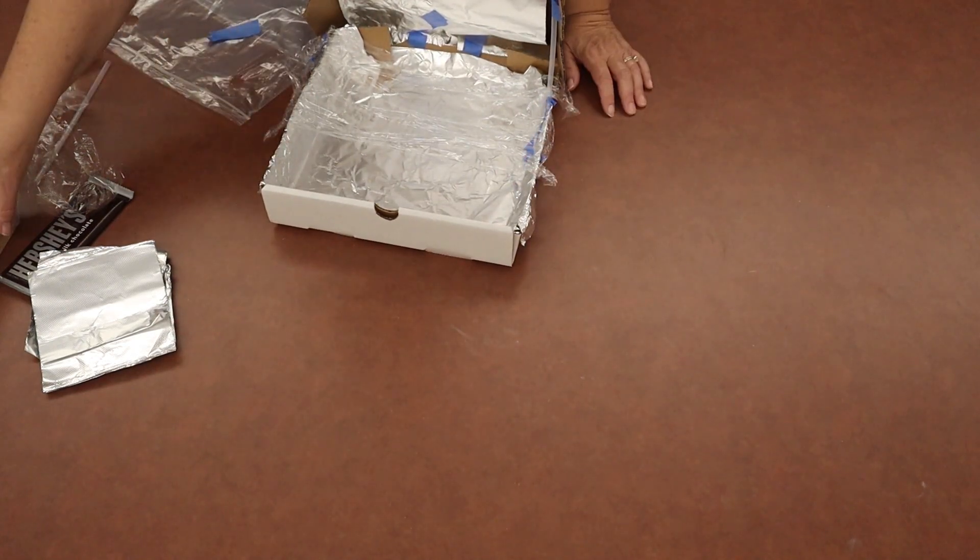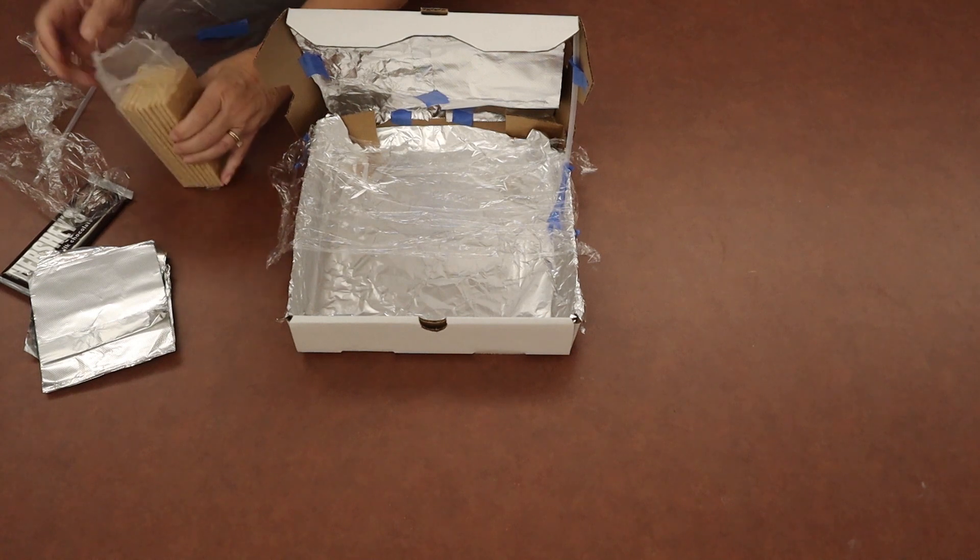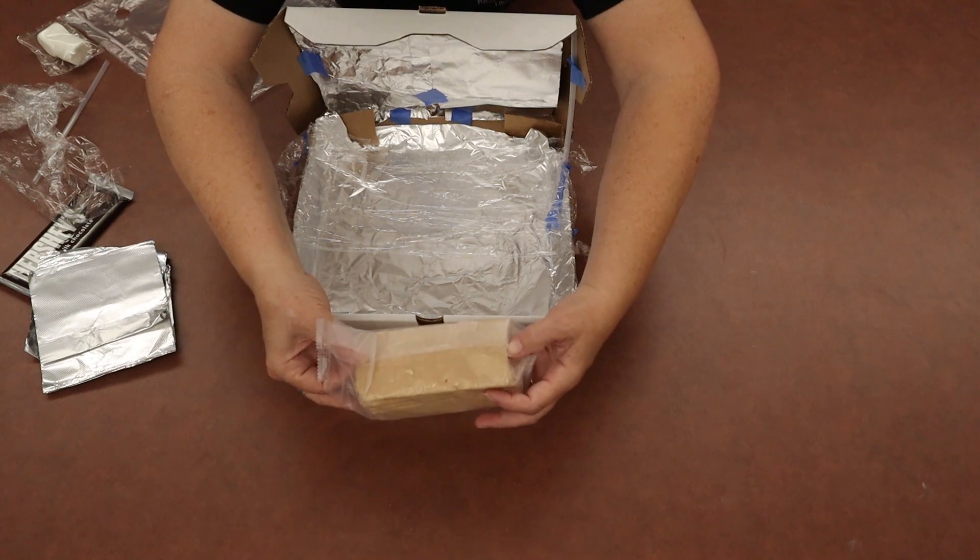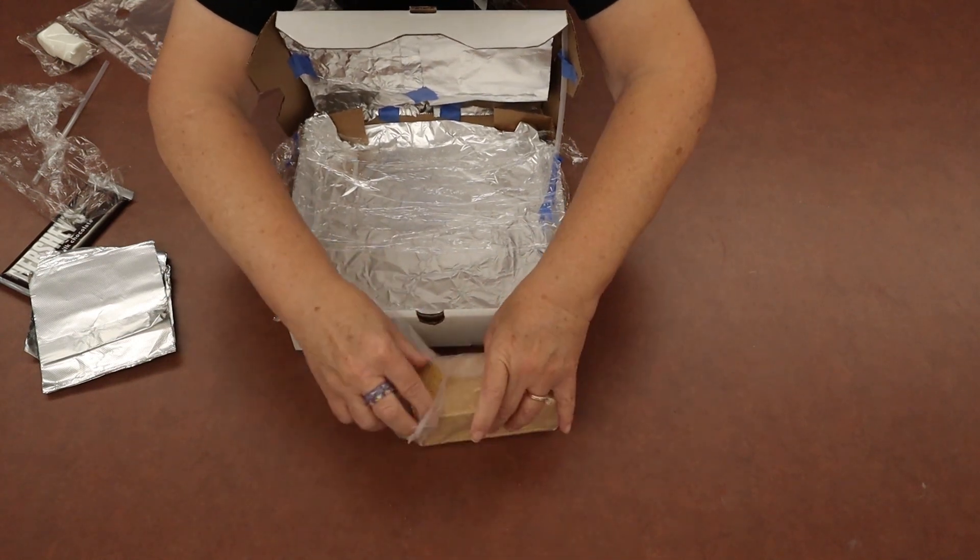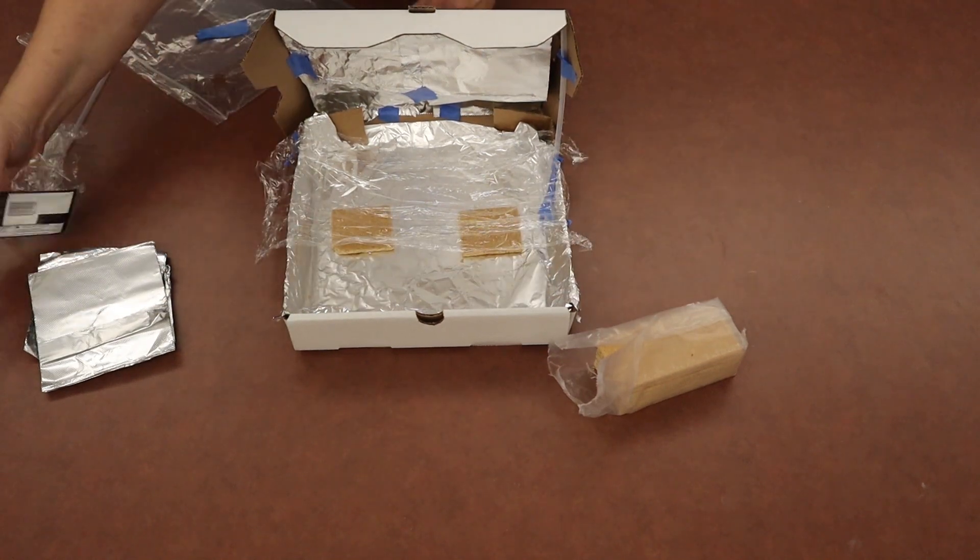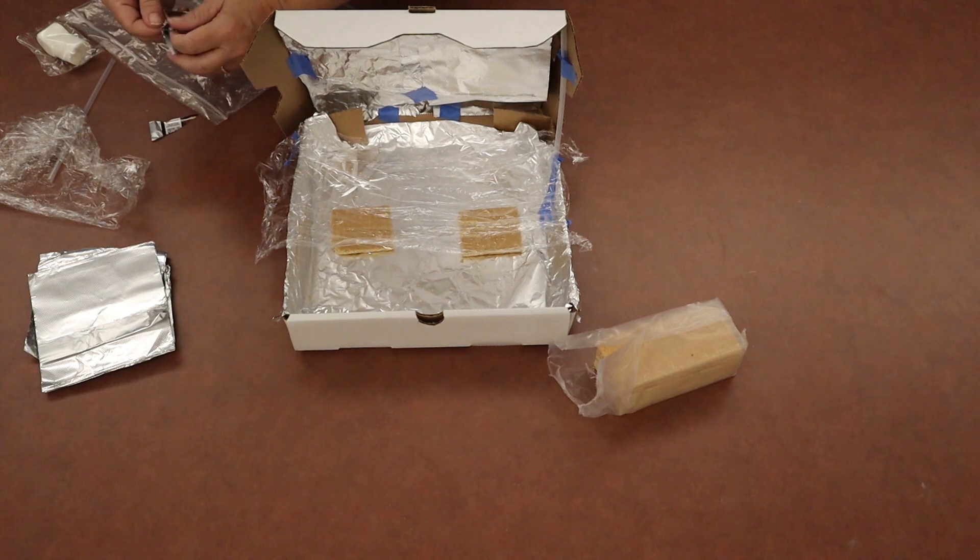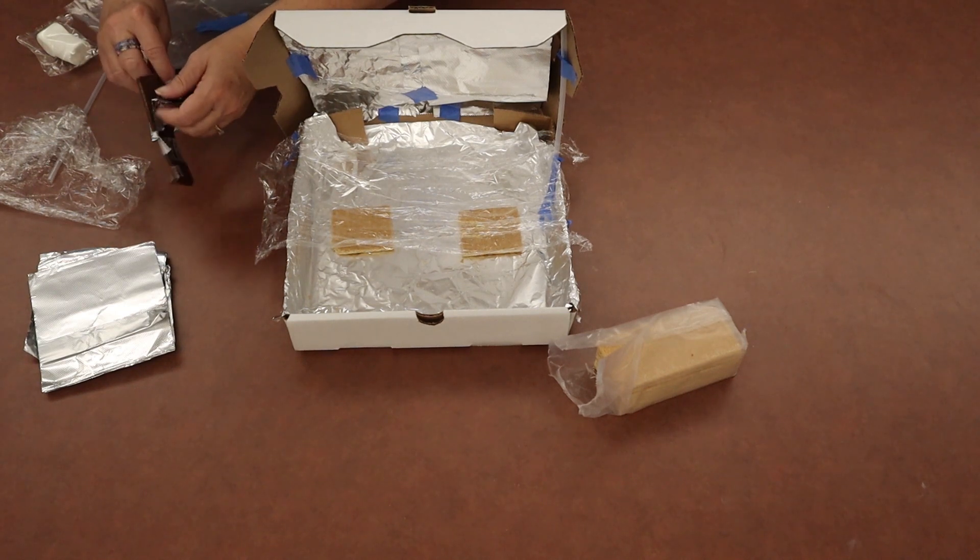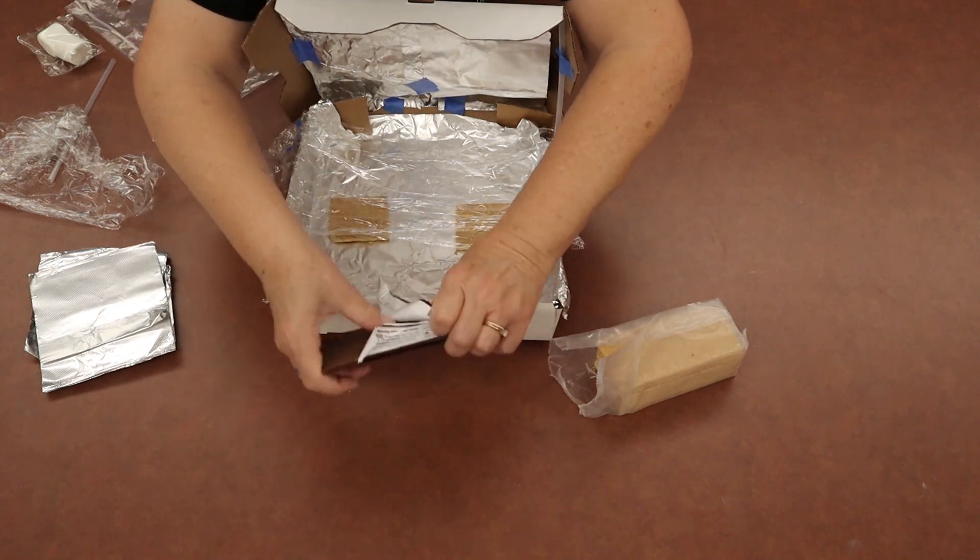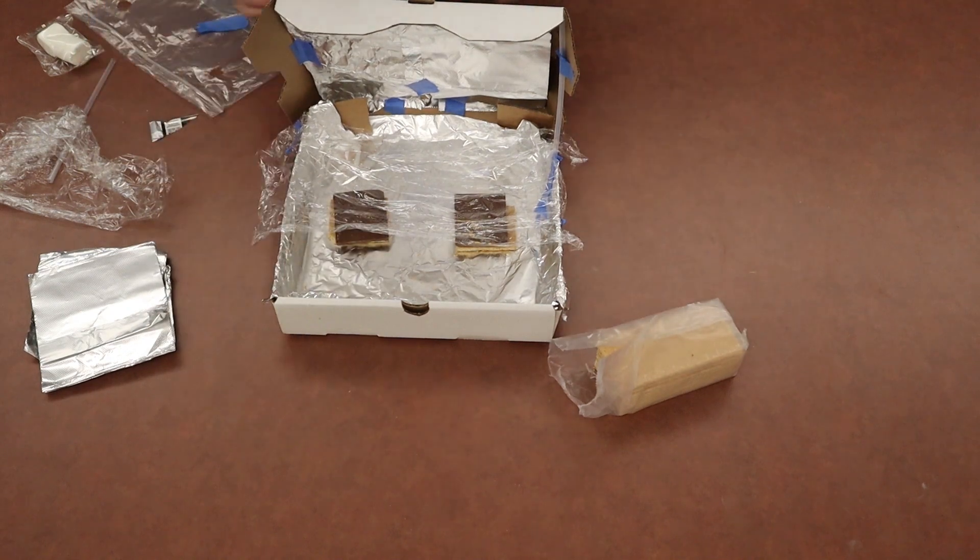Then what I would do next is I would take your graham crackers and get them ready. So just open the end of your graham cracker package, then just break it in half, stick it under there. You can make two at a time if you like. You could make more, there's room for more, but you have the supplies to make two s'mores. Then open your chocolate bar, break that in half, put the chocolate on the graham cracker.